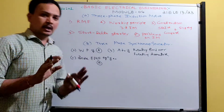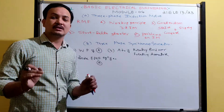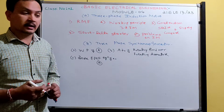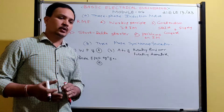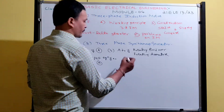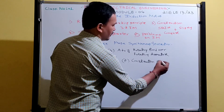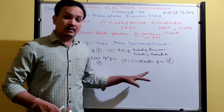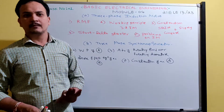Next we have the topic of deriving the EMF equation of an alternator, and problems on this EMF equation are very easy. What is required is understanding the question — what data is given and what we need to calculate. After that is the construction of an alternator. The stator construction of an alternator is almost similar to the stator construction of an induction motor.